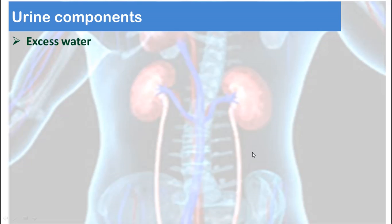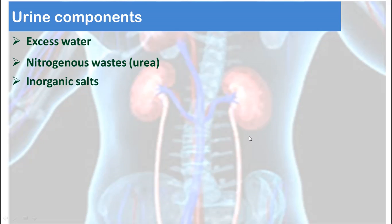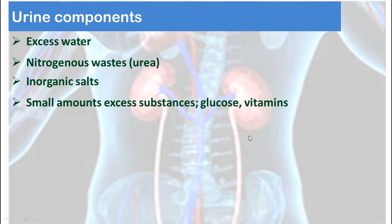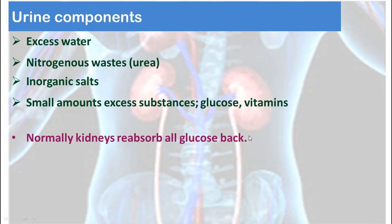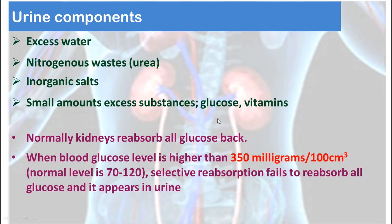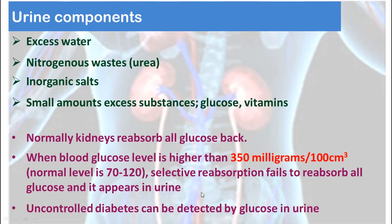Urine components include excess water, nitrogenous wastes, inorganic salts, and small amounts of excess substances like glucose and vitamins. Normally, glucose is reabsorbed completely by the kidneys, except in cases of very high concentration of glucose in blood. If blood glucose level exceeds 350 — knowing that the normal level ranges from 70 to 120 — selective reabsorption fails to reabsorb this excess glucose, and we will have glucose in our urine. This can be an indicator of diabetes.